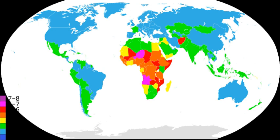As part of China's planned birth policy, work-unit supervisors monitored the fertility of married women and may decide whose turn it is to have a baby. The Chinese government introduced the policy in 1978 to alleviate the social and environmental problems of China. According to government officials, the policy has helped prevent 400 million births.